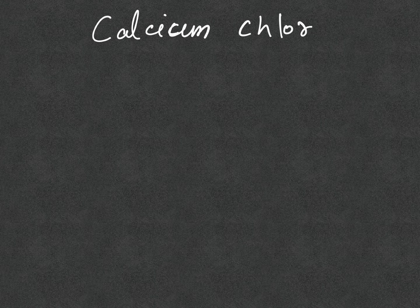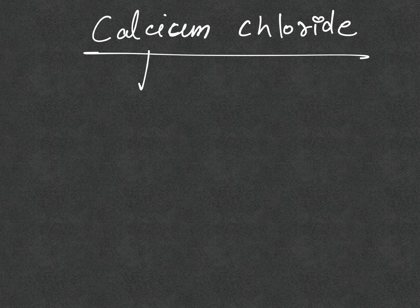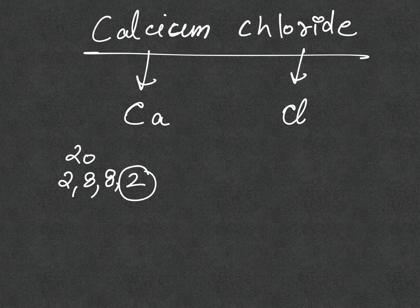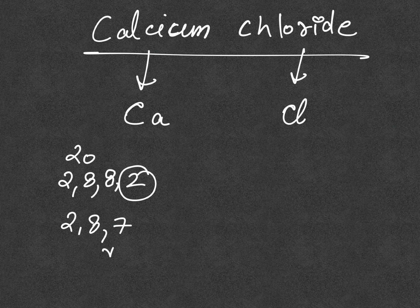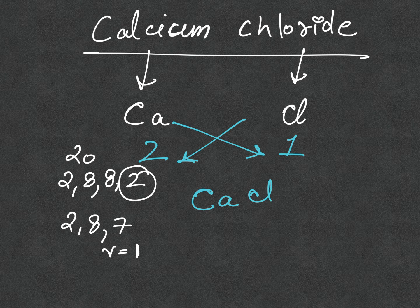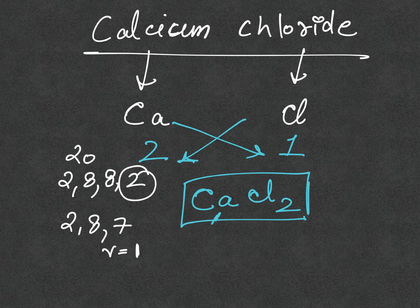Now let's take calcium chloride. The symbol for calcium is Ca and for chloride is Cl. Calcium has atomic number 20 and configuration 2,8,8,2 — so its valency is 2. Chlorine has configuration 2,8,7 and will gain one more electron, giving it valency 1. Performing the crisscross method we get CaCl₂. This gives one calcium ion and two chlorine atoms, balancing the net charge.